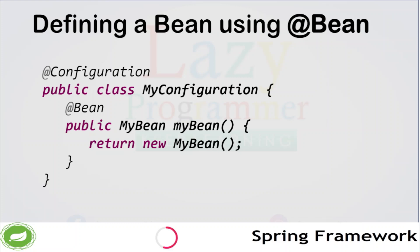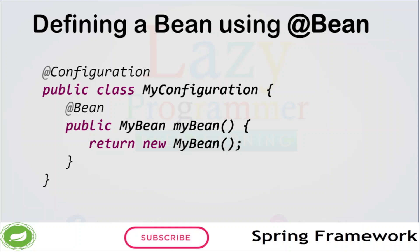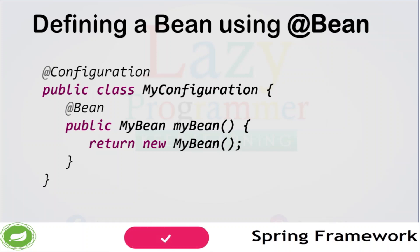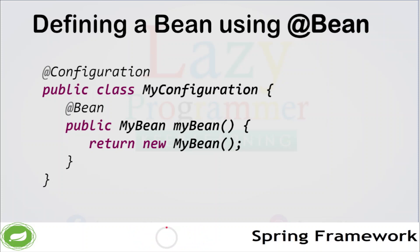So how do you define a Spring Bean? There are a few different ways to do that, but the most common is through the use of the @Bean annotation. This annotation is used to indicate that a method will return a Spring Bean.